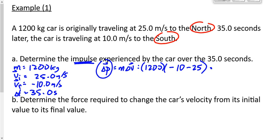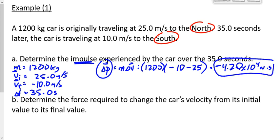That calculates to −4.20 times 10 to the 4 newton-seconds. That's a negative impulse — should it be? This car is moving north, then it slows down in the positive direction, stops, and speeds up in the negative direction to the south. Either way you look at it, that should be a negative impulse, and it is.